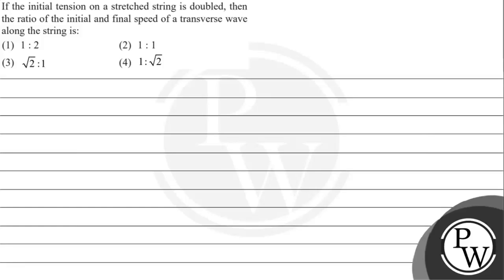Hello, let's read the given question. The question says if the initial tension on a stretched string is doubled, then the ratio of the initial and final speed of the transverse wave along the string is: option 1 - 1 is to 2, option 2 - 1 is to 1, option 3 - root 2 is to 1, option 4 - 1 is to root 2.